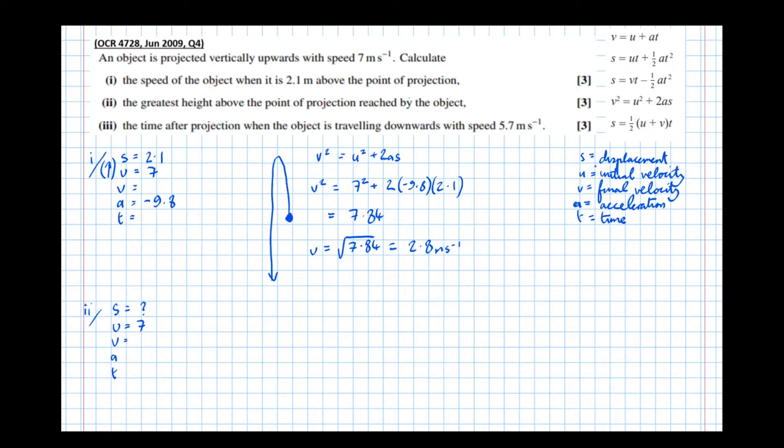V, we know at the greatest point, the highest point, which is here, it's just on the point of turning back. So the velocity here is actually 0 for a moment, an instantaneous moment. The velocity is 0 just while it turns. V equals 0, and a is again negative 9.8. And t, we don't know.